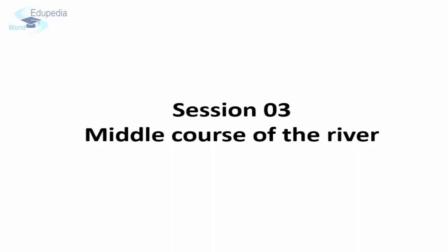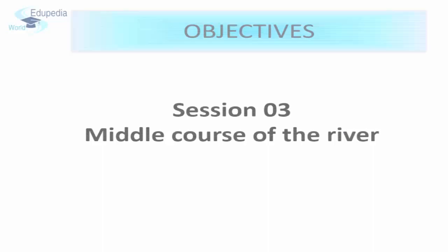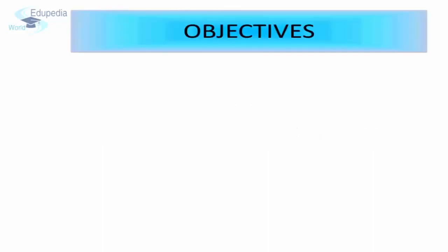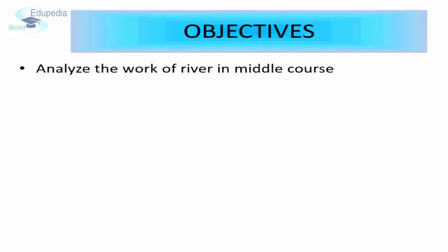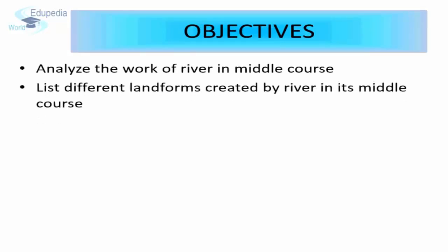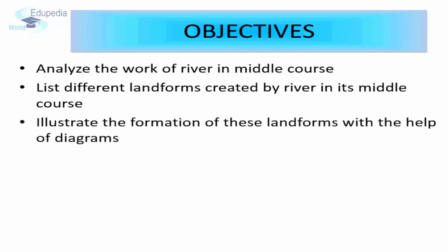In this session, we will analyze the work of river in its middle course. We are going to try and achieve the following objectives: analyze the work of river in a middle course, list different landforms created by river in its middle course, and illustrate the formation of these landforms with the help of diagrams.